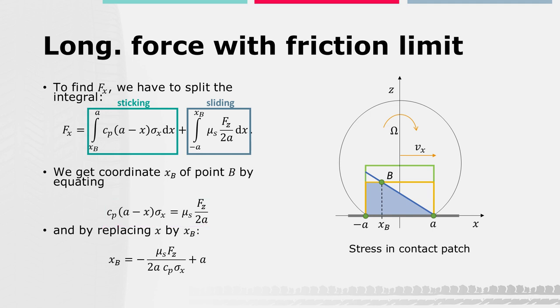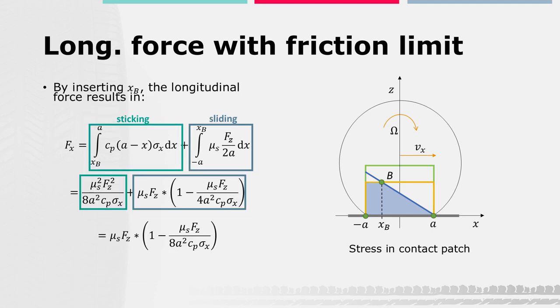Replacing x in the second equation by xB and rearranging, xB is now a function of the static friction limit mu_s, the vertical load Fz, half the contact patch length A, the bristle stiffness Cp, and the longitudinal slip sigma_x. Since the position of B can now be described, the integral can be solved. This results in expressions for the sticking and sliding areas, and the resulting longitudinal force equation is shown below, without distinguishing between sticking and sliding proportions.